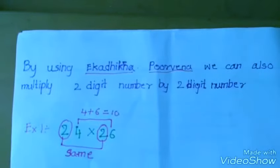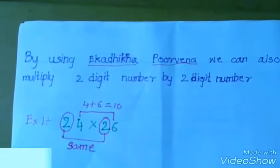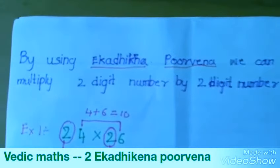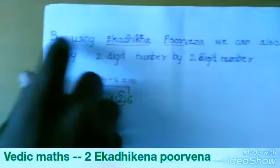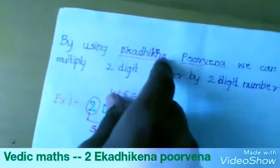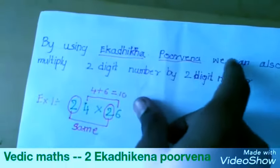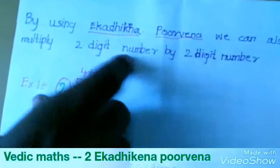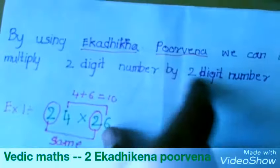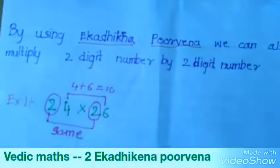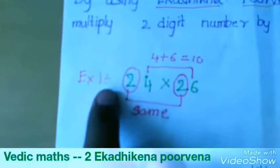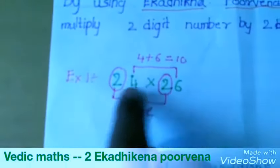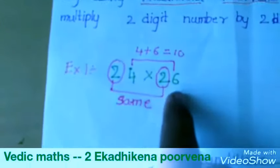Hi friends. By Ekadhikena Purvena, we can also multiply a 2-digit number by a 2-digit number. I am showing one example: 24 into 26.